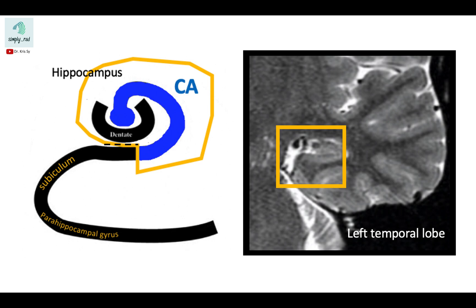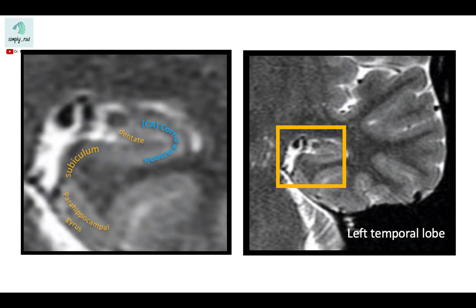So going back to our MR image, we now understand that the dentate gyrus and cornu ammonis are interlocked like this due to the process of infolding. Note that the subiculum is medial compared to the hippocampus.